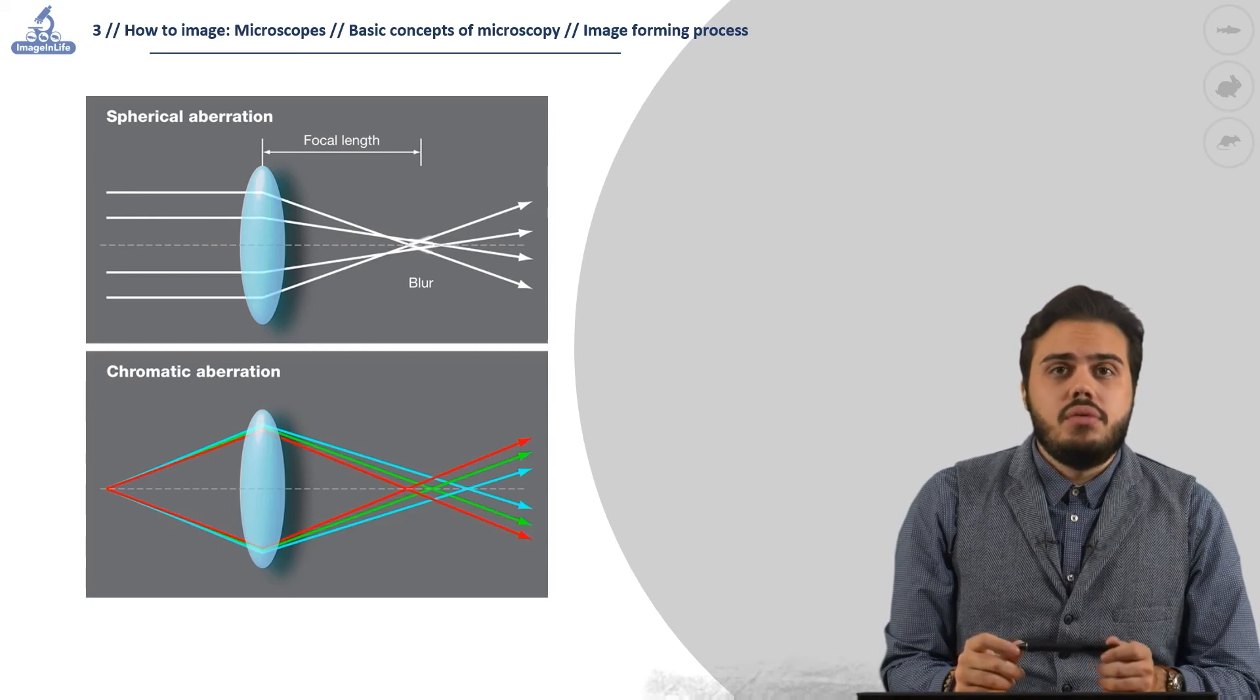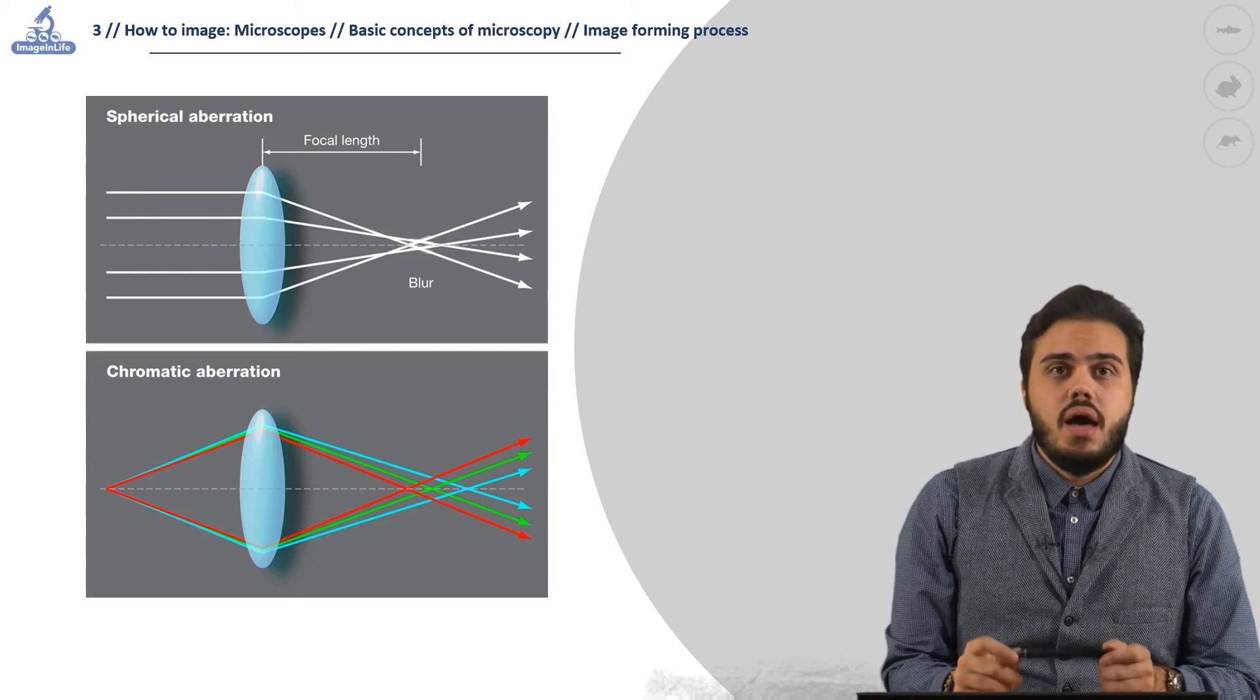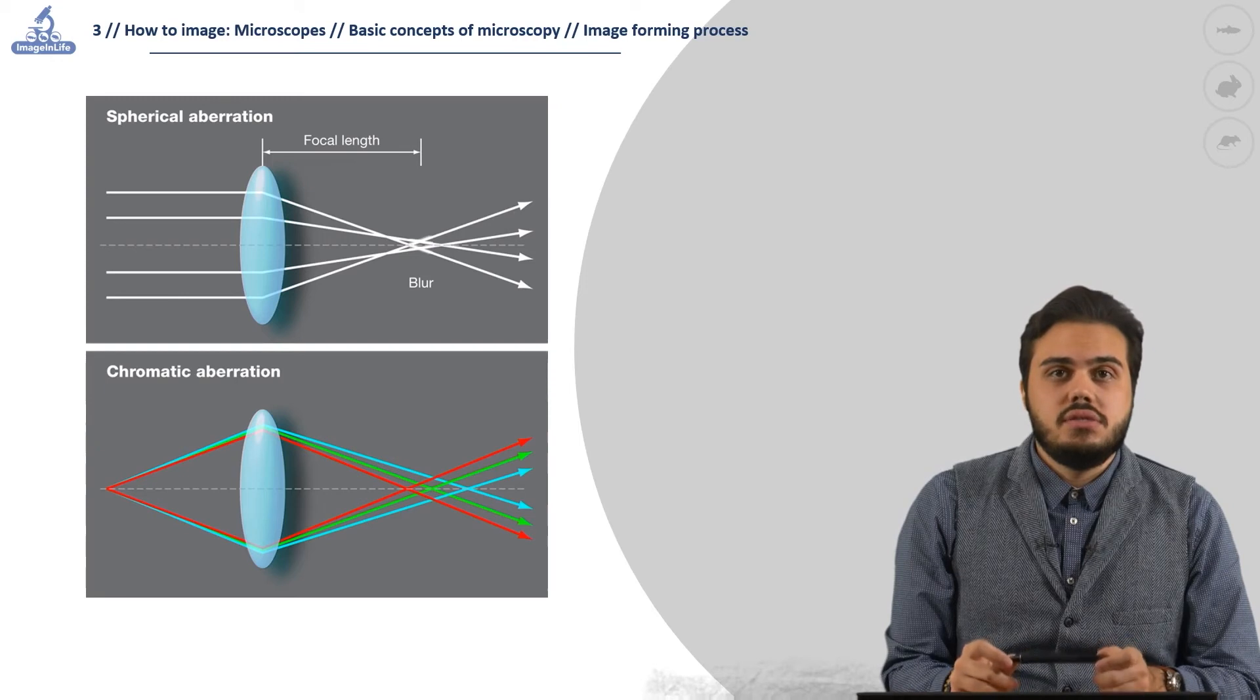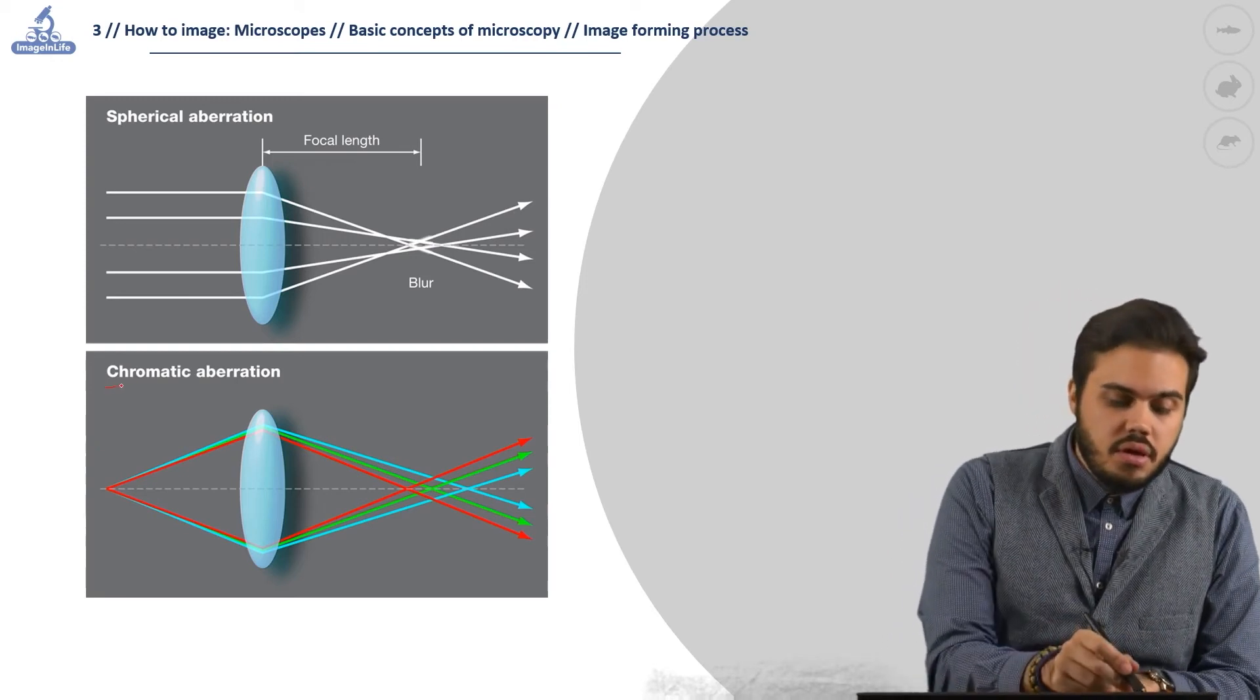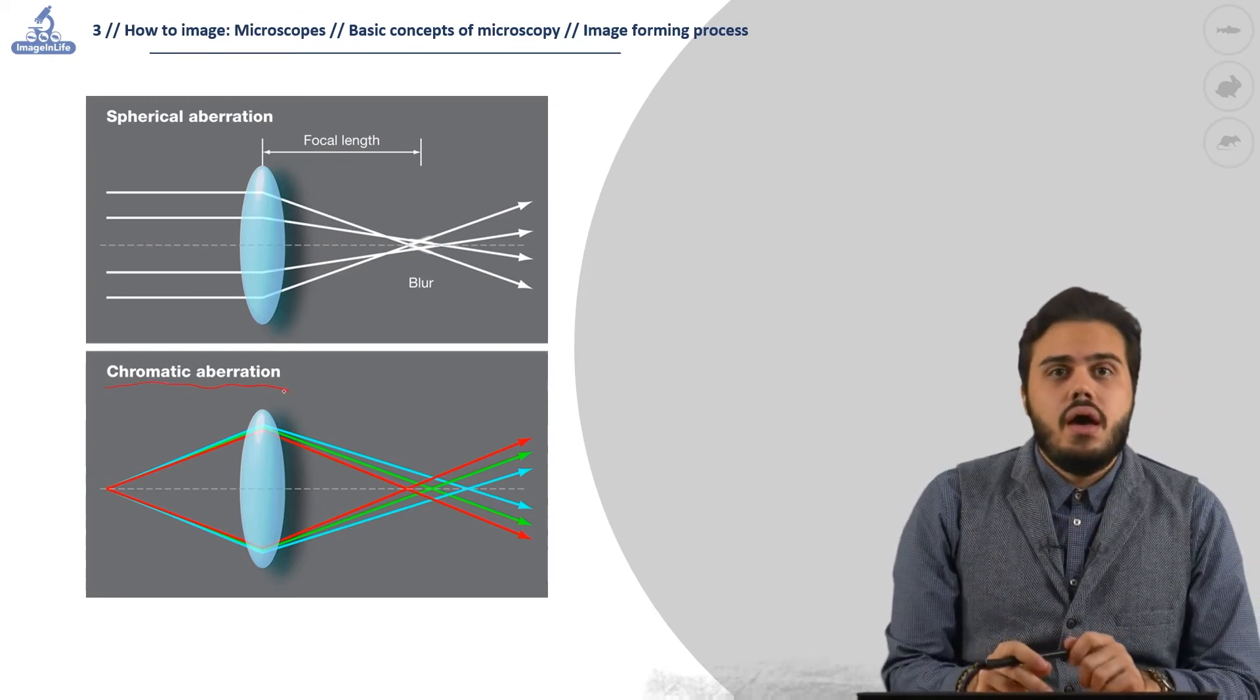An important limit to the resolution of a microscope are aberrations. There are mainly two classes of aberration: the chromatic aberration and the spherical aberration.